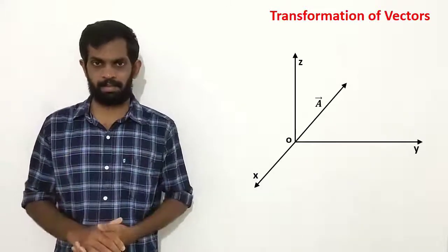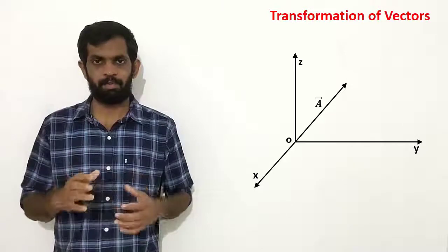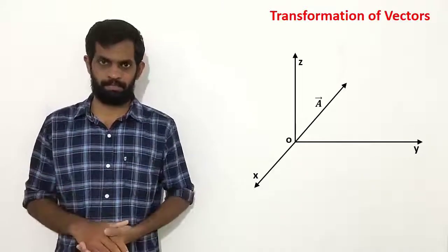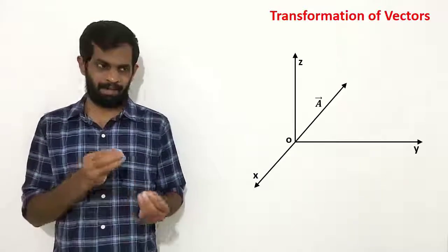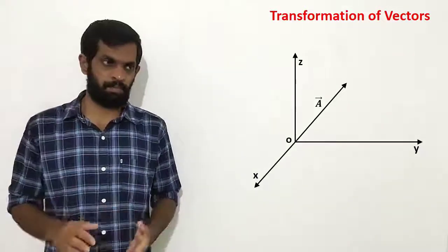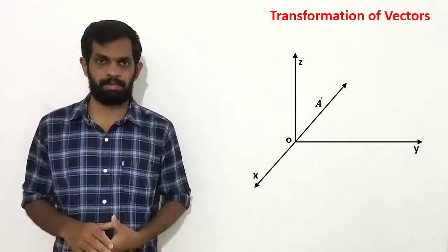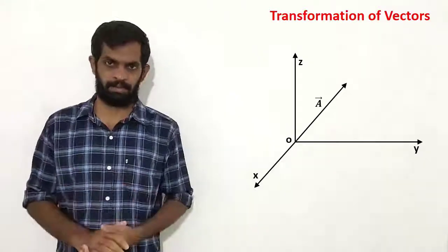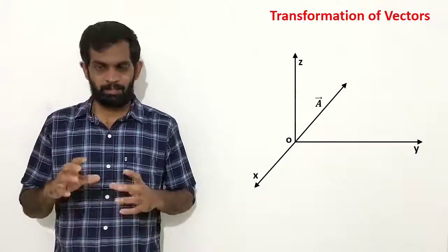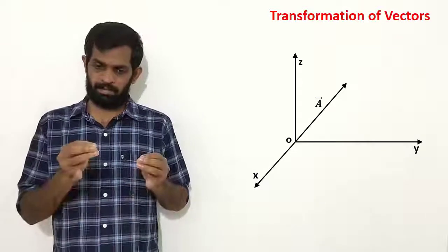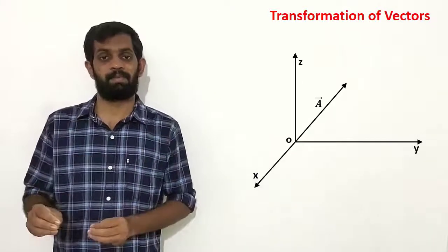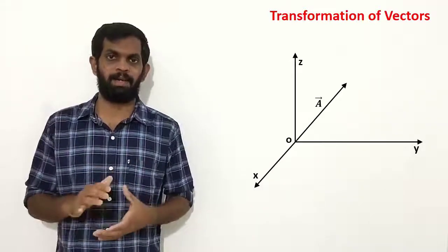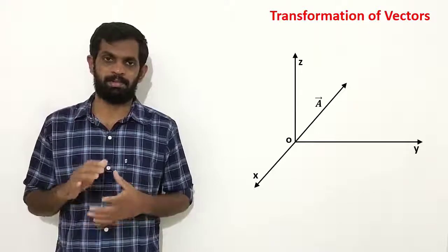Now, I am going to show you how a vector is transformed under coordinate rotation, and from that I will explain what a vector truly is. At the plus-2 level of knowledge, we know a vector is a quantity which has a magnitude and a direction. But now we are going to see how to give a more rigorous definition of a vector.